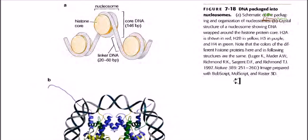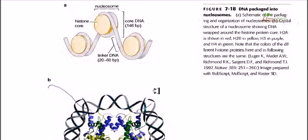Hello friends, welcome to the tutorial. In this tutorial we are going to look at the way DNA is packed inside a compact structure called chromosome. In all eukaryotic organisms, we have much more complex chromosomes and much longer DNA segments to be encrypted, so they need to store them inside some compact region. They store these DNA materials by making them compact using structures called nucleosomes.